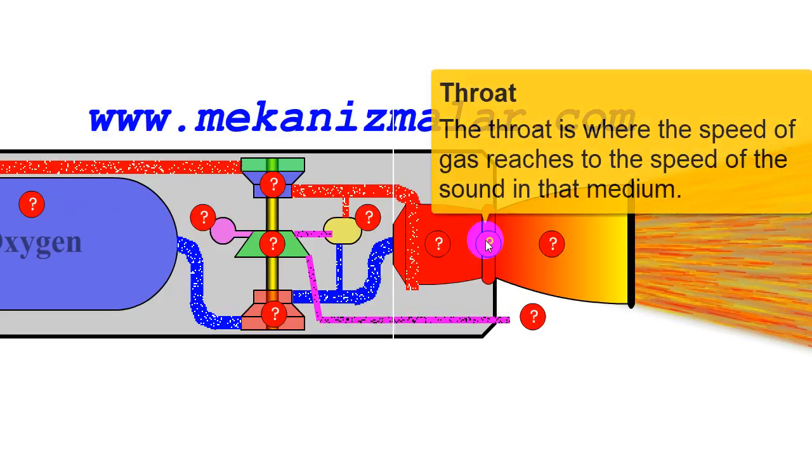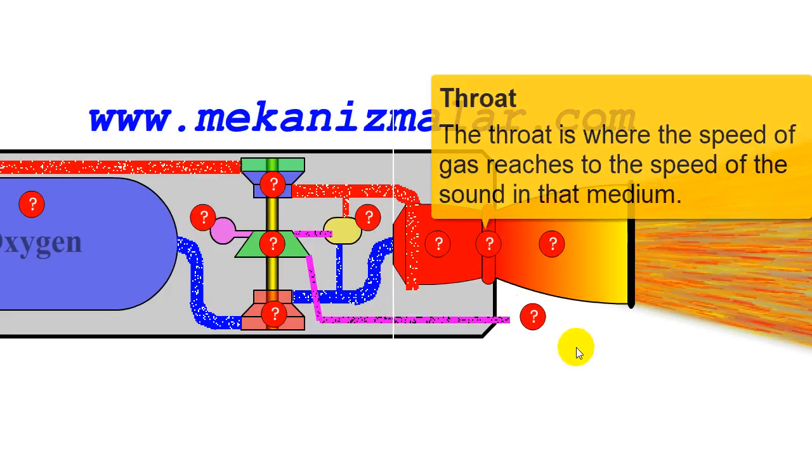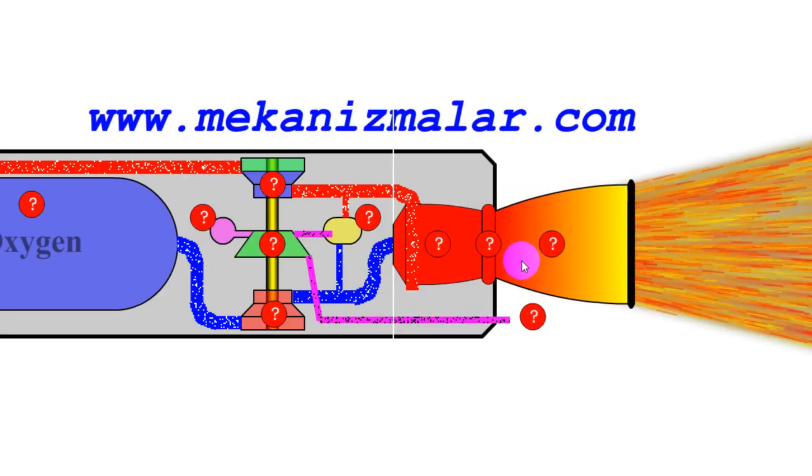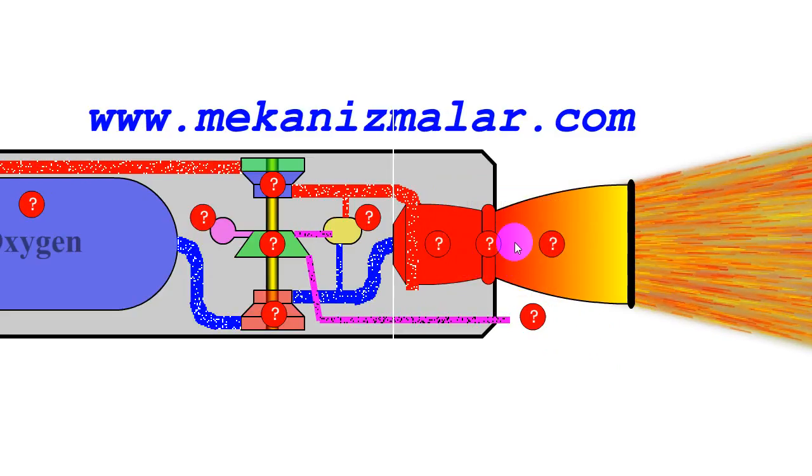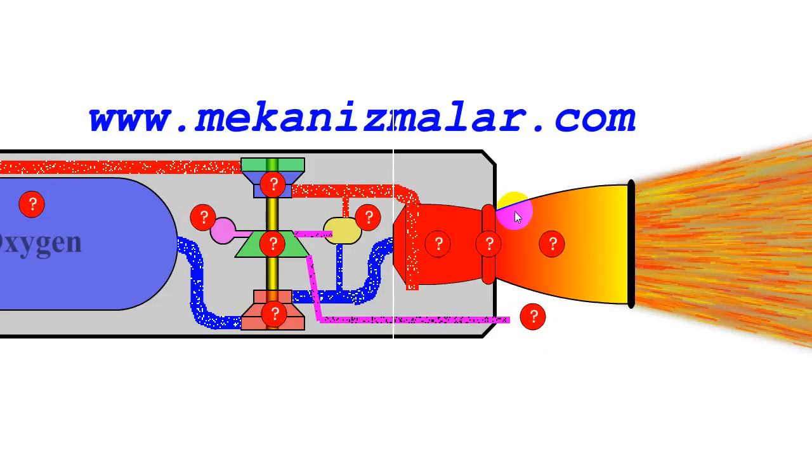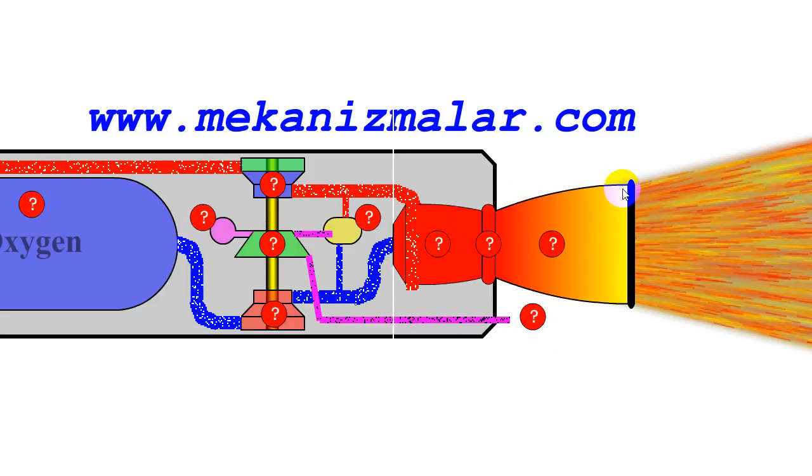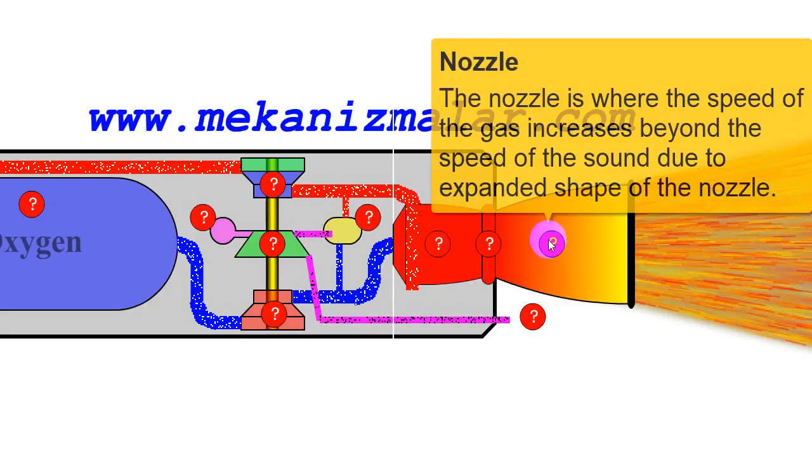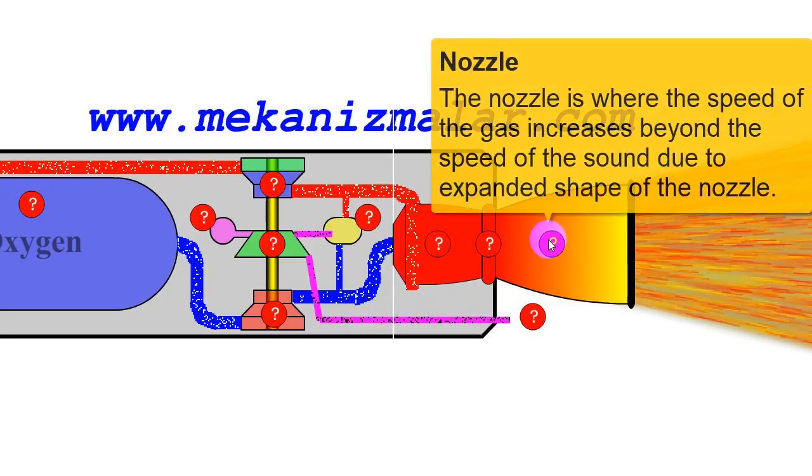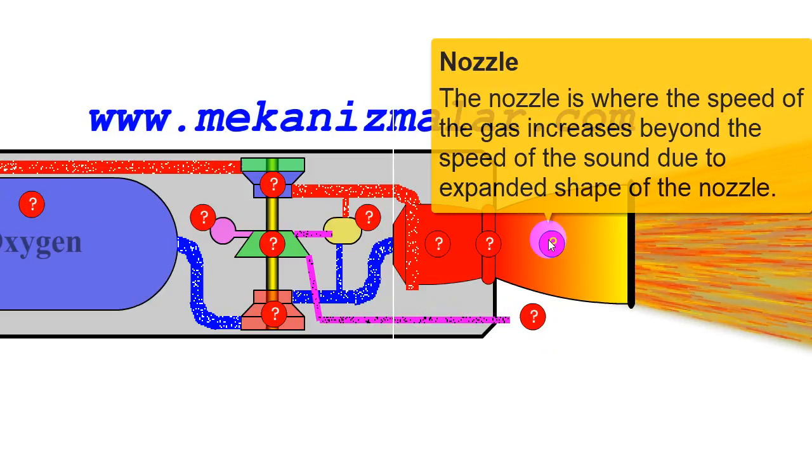At which point reducing the area further causes shock waves to be generated inside the nozzle. To prevent shock wave formation and to increase the gas velocity, the area of the nozzle must gradually increase. We call the area where flow speed is going from subsonic to supersonic the throat of the nozzle.